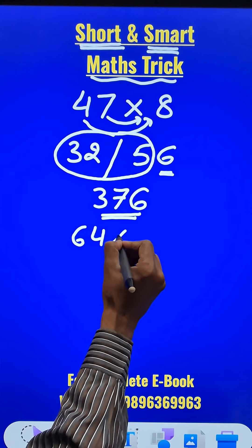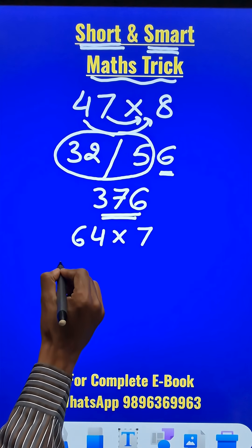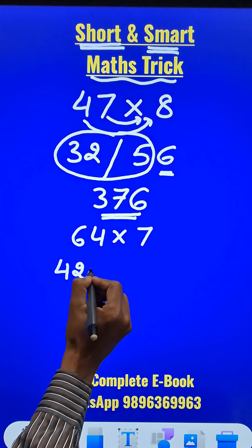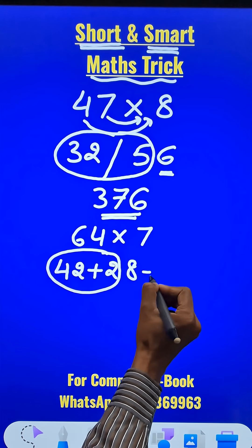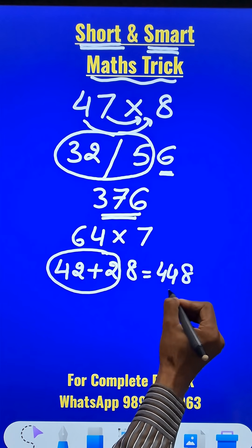Can we do 64 times 7 like this? 6 times 7 is 42 and what do we visualize? 4 times 7 which is 28. Just add these two, you will have 44 and 8, that gives you your answer.